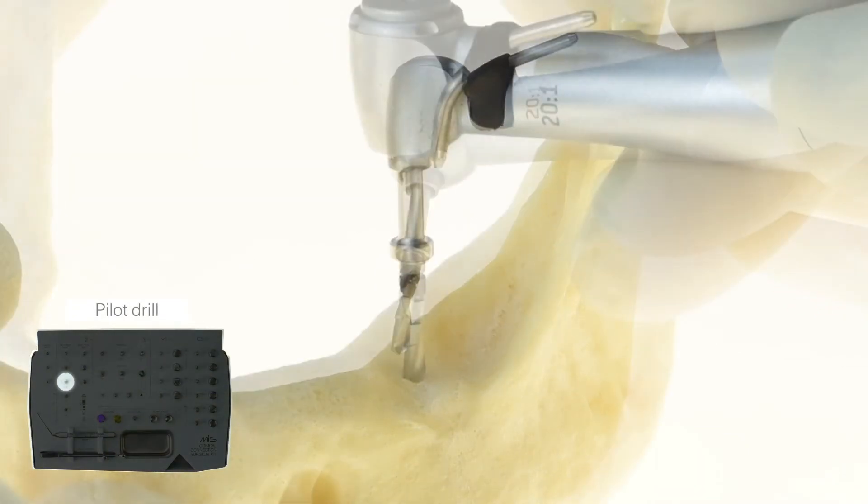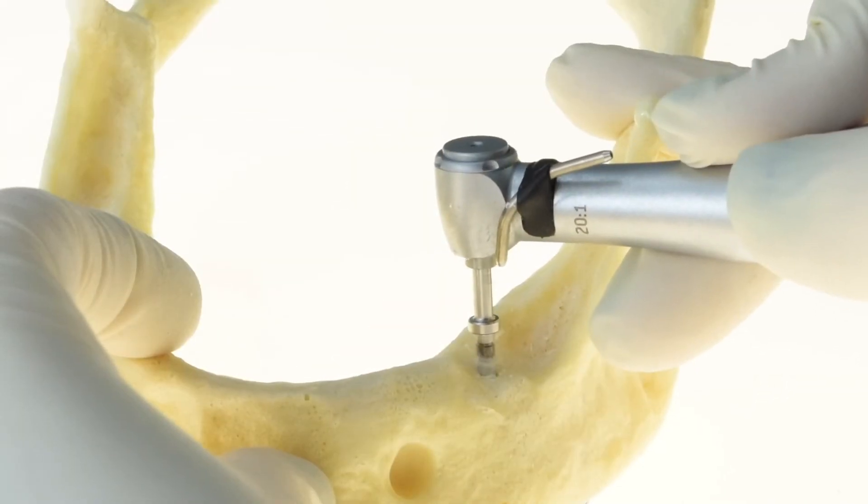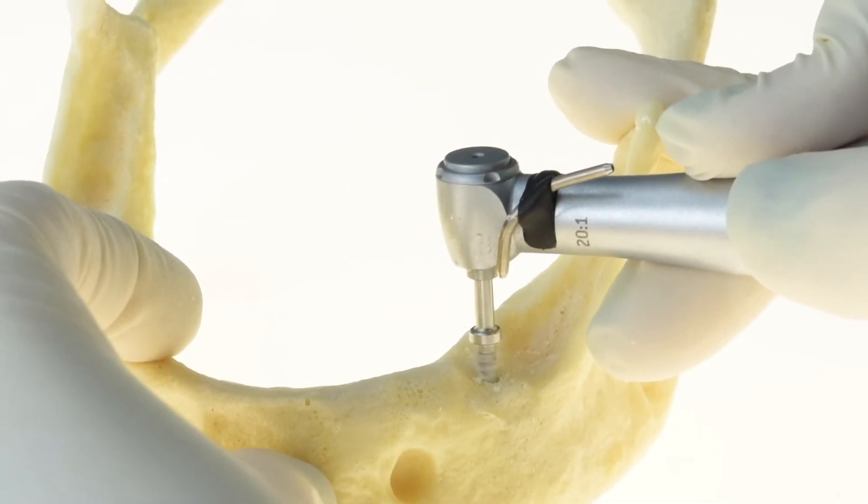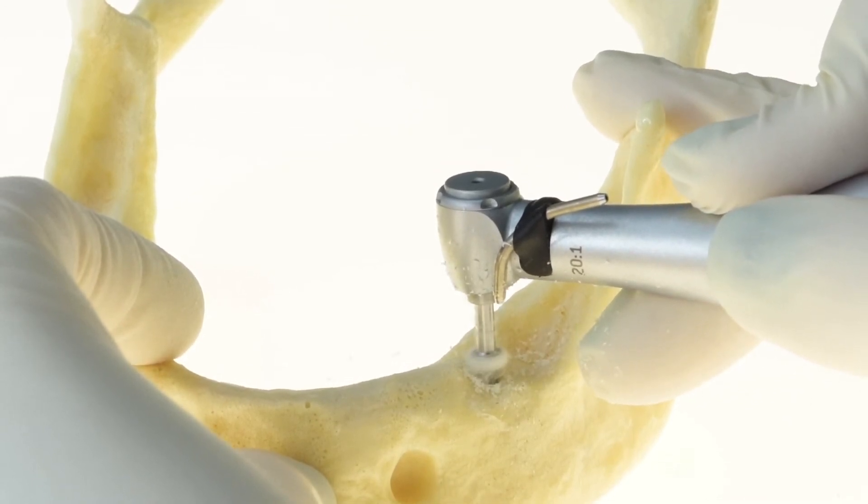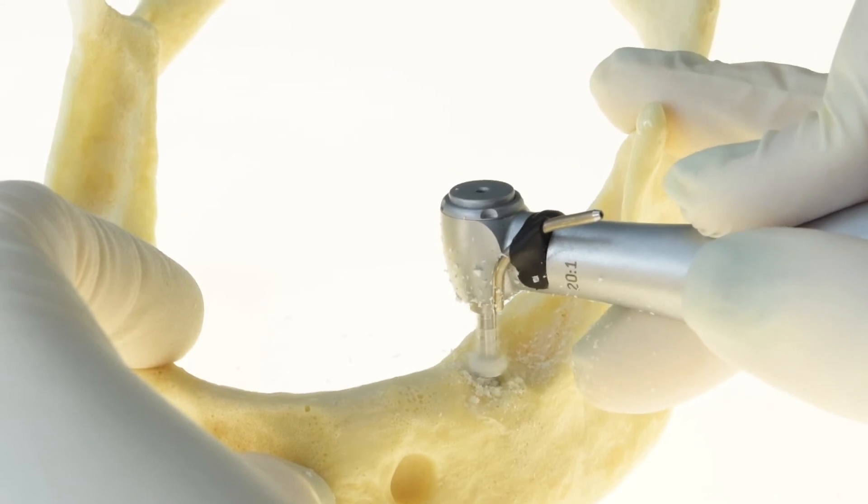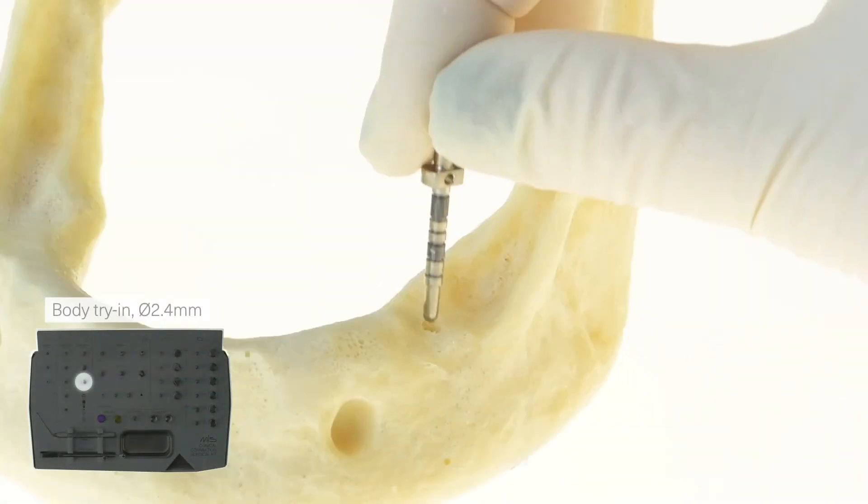The pilot drill includes a built-in stopper, where the drill tip is 2 mm in diameter, while the rest of the drill is 2.4. This step ensures a more stable start to the procedure. The pilot drill goes to the full depth of the osteotomy.